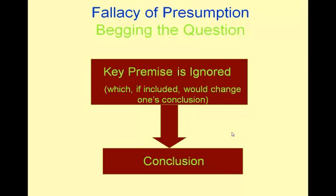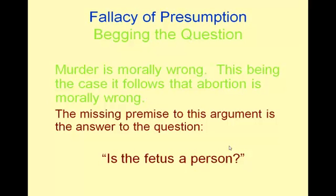Another form of begging the question is when a key premise is ignored. If that premise were included, it may change the conclusion. For example: 'Murder is morally wrong. This being the case, it follows that abortion is morally wrong.' The missing premise is the answer to the very important question: is the fetus a person? With that premise missing, it is not possible to claim that abortion is morally wrong.